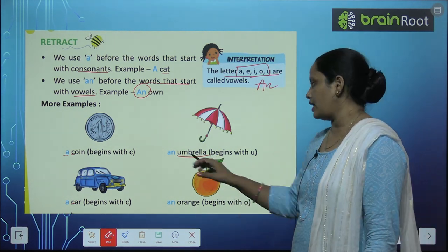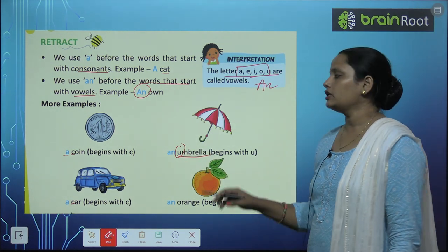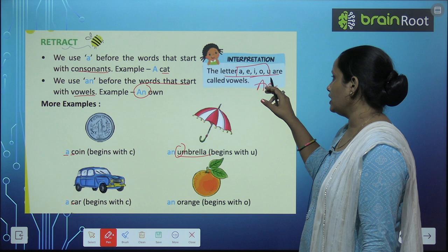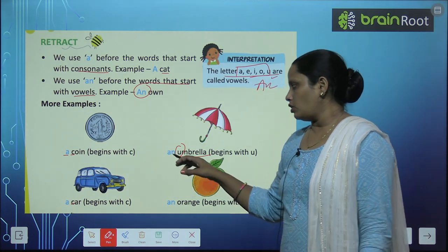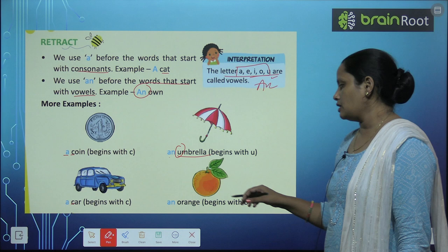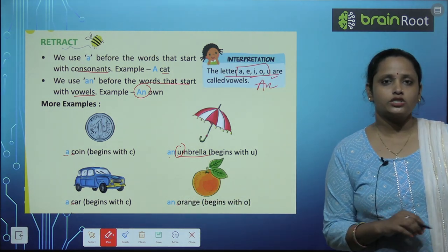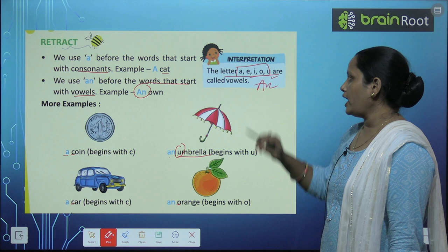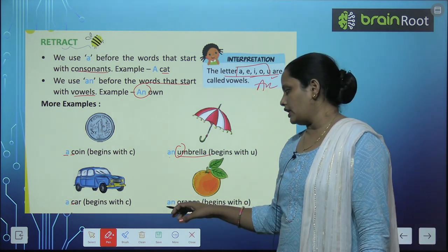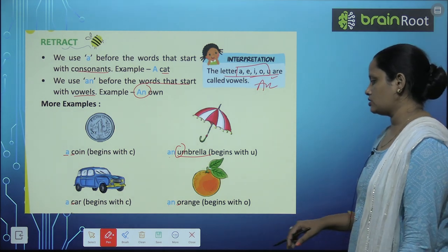Umbrella में पहला letter है U. U एक vowel है — यहां देखो लिखा है. तो हम लगाएंगे An Umbrella. Similarly, orange start होता है O से, और O है एक vowel. तो हम लिखेंगे An Orange.